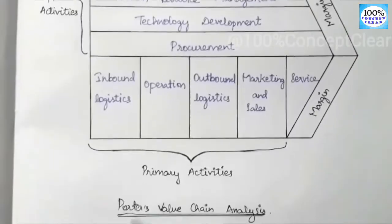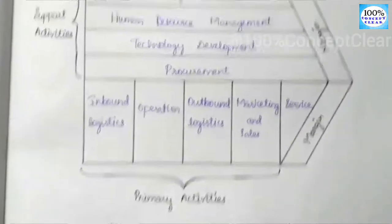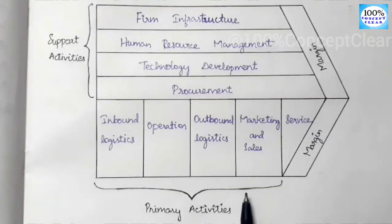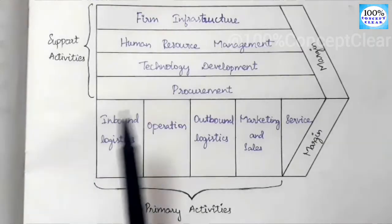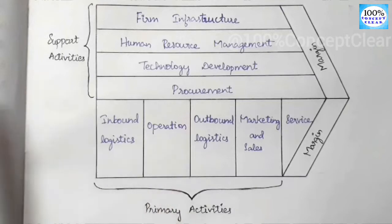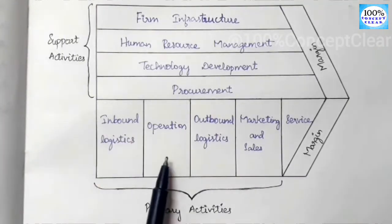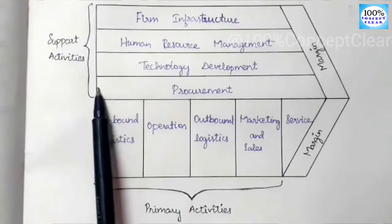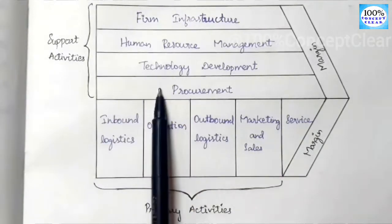In Porter's value chain analysis model, you can see all activities in a firm divided into two categories: primary activities — five activities — and support activities — four activities.